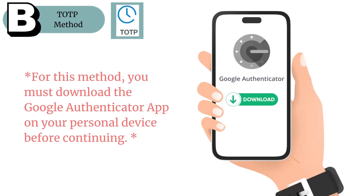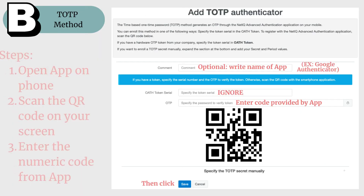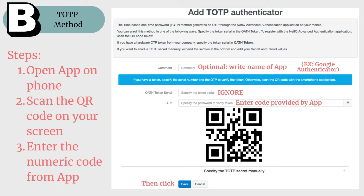If you chose to add Option B, the time-based one-time passcode method, you will have to follow some additional steps before moving forward. Grab your personal device and download an authenticator app, such as Google Authenticator, to complete the steps for TOTP.